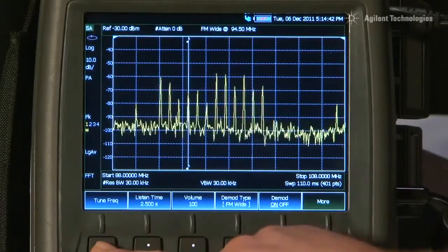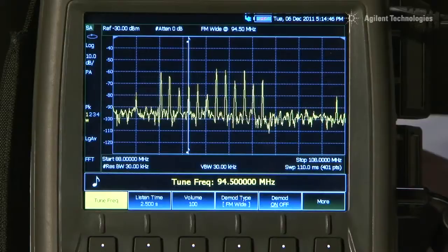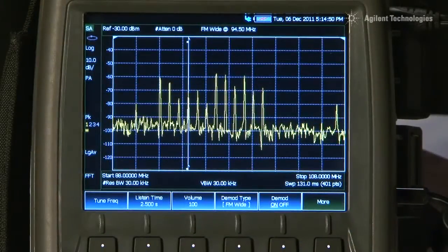the analyzer does a new sweep and then pauses for the listen type. We can now select the tune frequency, currently set to 94.5 MHz, and as you can hear, we can now demodulate the transmission.